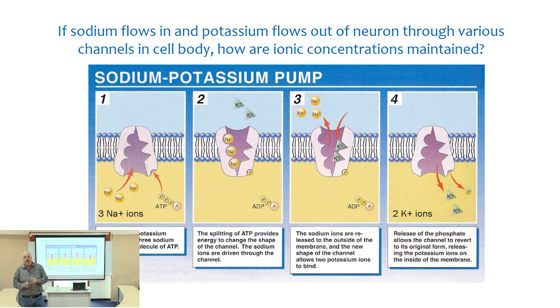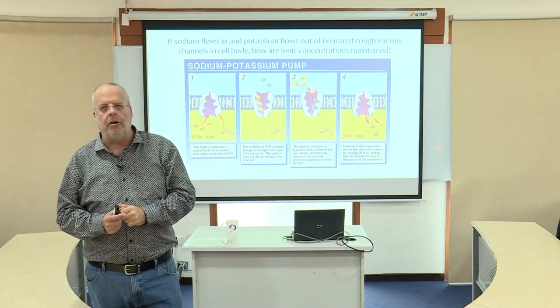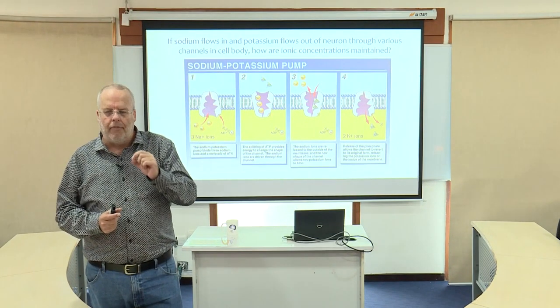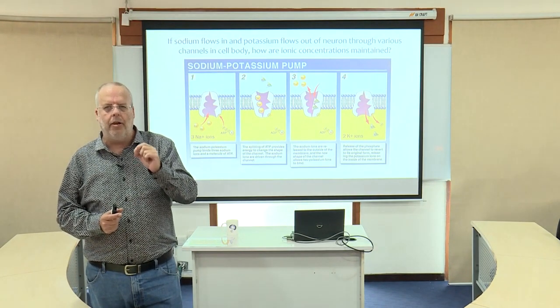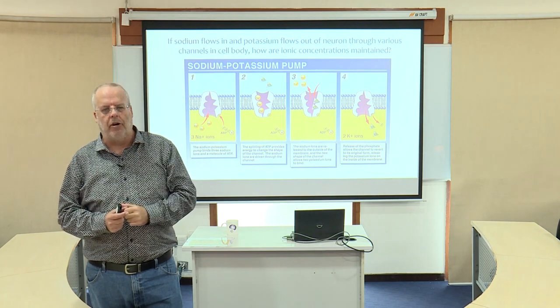The ATP required for these pumps is almost 40% of a cell's energy expenditure — very costly, but very important for the cell's function.